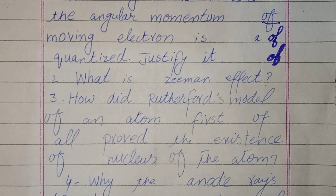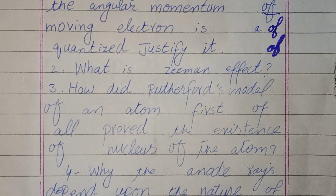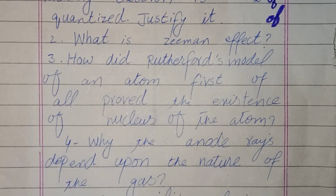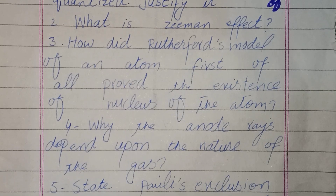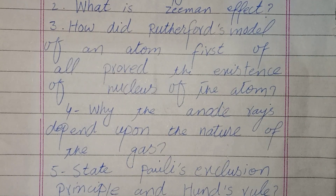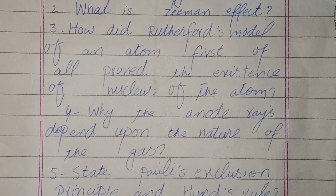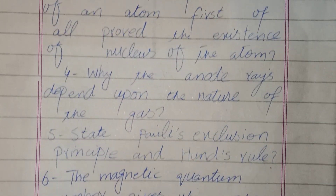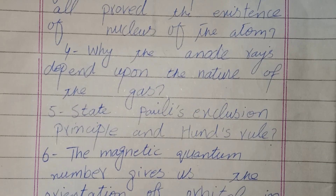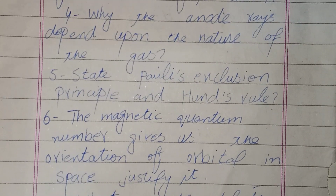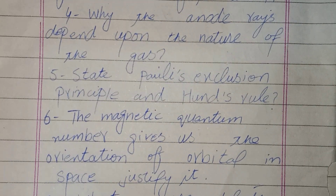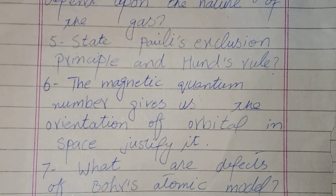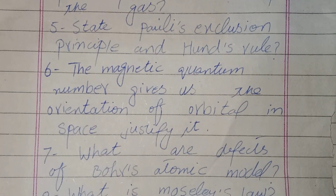Question number two: What is the Zeeman effect? Question number three: How did the Rutherford model of an atom first of all prove the existence of the nucleus of the atom? And for number four, why are the canal rays dependent upon the nature of the gas? State Pauli's exclusion principle and hence the rule. The magnetic quantum number gives us the orientation of the orbital in space — justify. What are the defects of Bohr's atomic model?